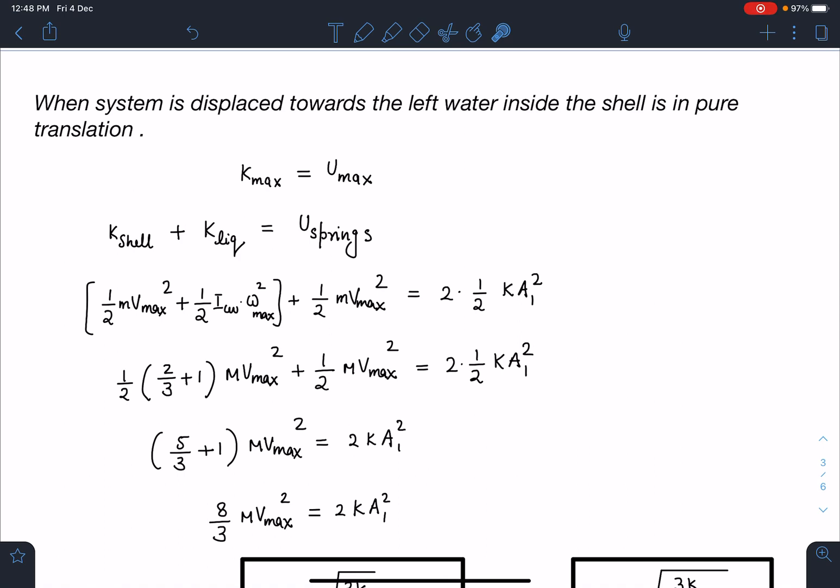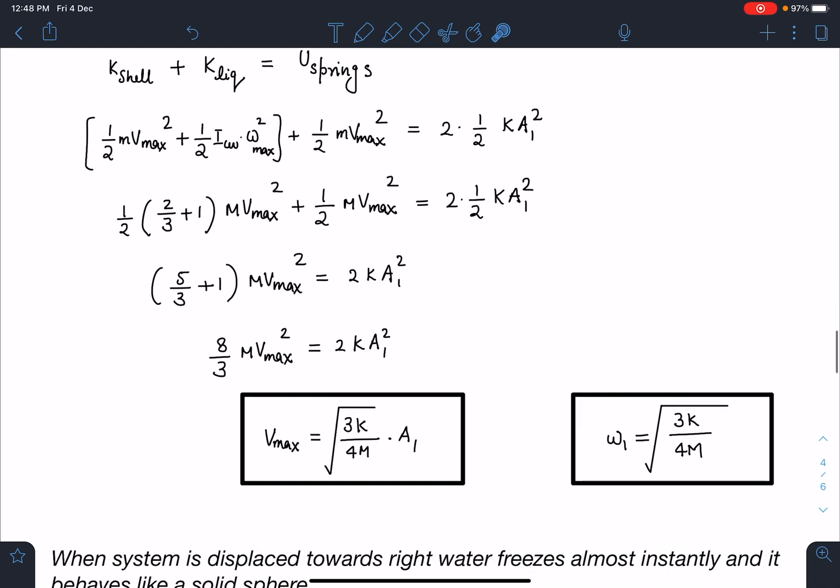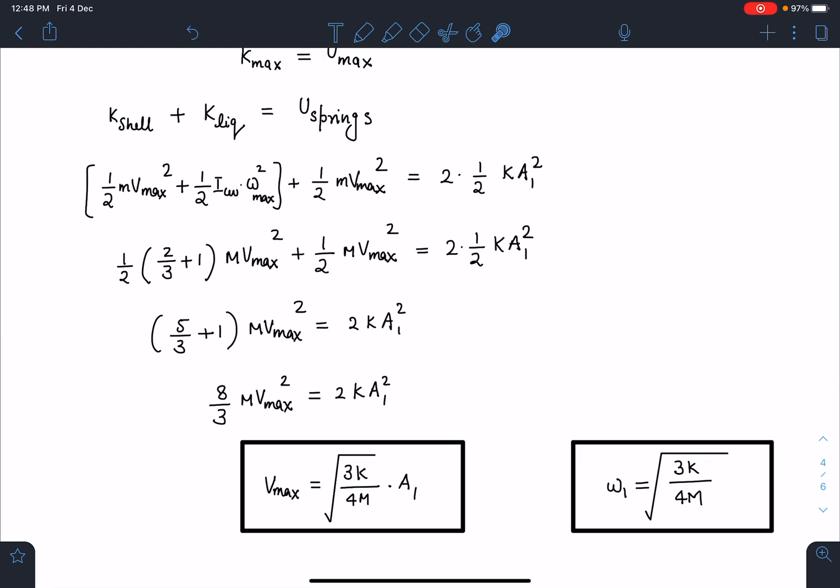This half cancels and this value I can write as 1/2(2/3 + 1)Mv_cm² plus 1/2 Mv_cm² equals 2 times 1/2 KA₁². When I simplify this, I get v_max as √(3K/4M) times A₁. If I compare this with v_max equals A*omega where A₁ is the amplitude, this is going to be omega_1 for the left part: √(3K/4M).